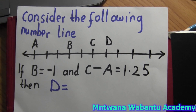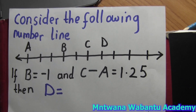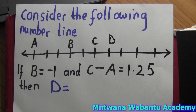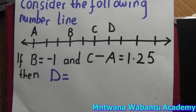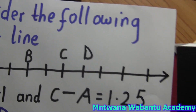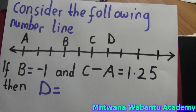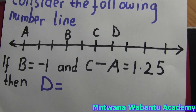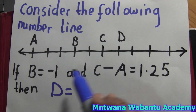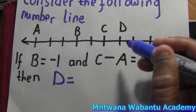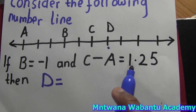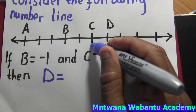Consider the following number line. We have b equal to negative one, and we're told c minus a equals 1.25. You have to use common sense and your mental brain here. We're looking for d, and they say c minus a equals 1.25.